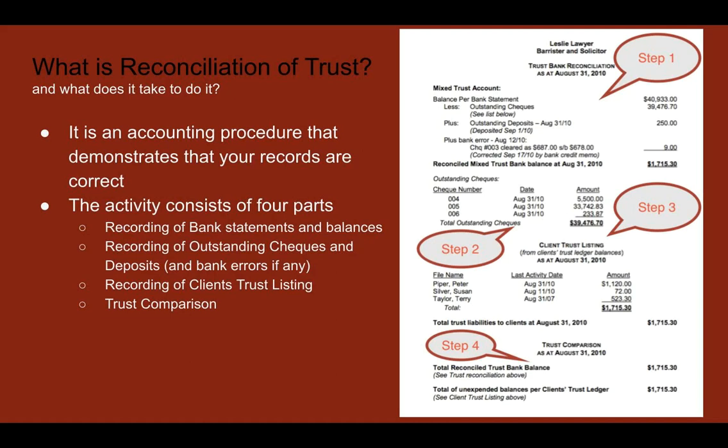The reconciled balance and the unexpended balance per the client trust ledger must match. This activity has four parts: one, record the balance per the bank statement; two, record all outstanding checks, deposits, and bank errors; three, maintain the client trust listing showing each client's balance totaling the reconciled mixed trust balance; and four, compare both figures. This is the core requirement for trust reconciliation.